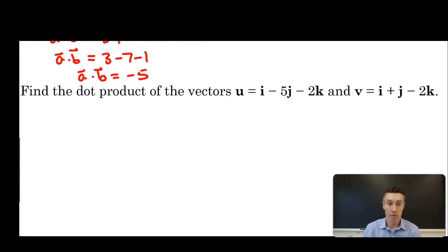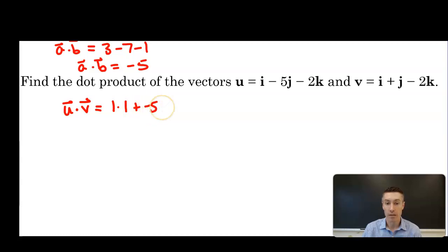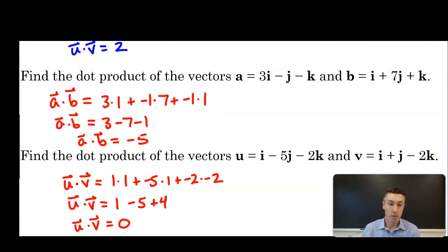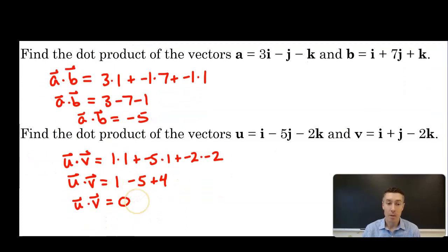In the third example, find the dot product of u = i - 5j - 2k and v = i + j - 2k. So u·v = 1×1 + (-5)×1 + (-2)×(-2) = 1 - 5 + 4, so u·v = 0. And no, it's not a zero vector, just the number 0. Looking across all three examples, we had a positive scalar, a negative scalar, and a scalar of 0 — and as we work through this lesson, we'll understand what each of these tells us about the two vectors.